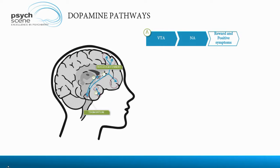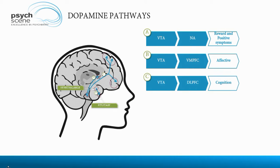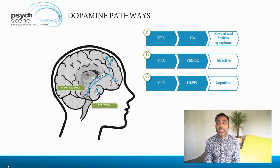The mesolimbic pathway arises from the ventral tegmental area to the nucleus accumbens. The nucleus accumbens mediates reward, so this area is responsible not only for the reward pathway but also where the positive symptoms arise. The next pathway is the ventral tegmental area to the ventromedial prefrontal cortex, responsible for mood. Then the ventral tegmental area to the dorsolateral prefrontal cortex — the mesocortical pathway — is linked to cognition and also negative symptoms.